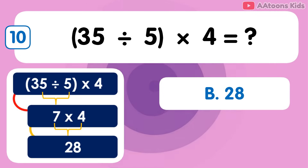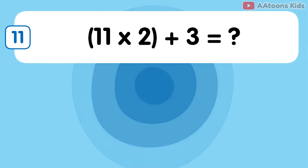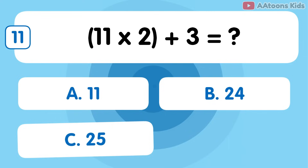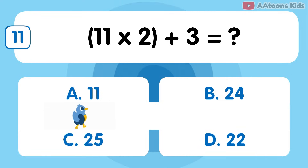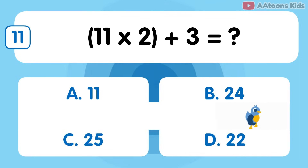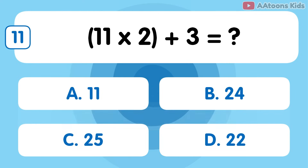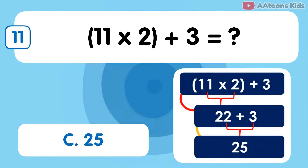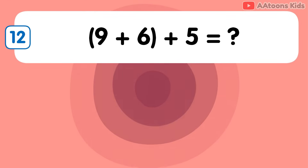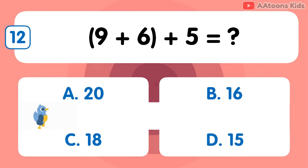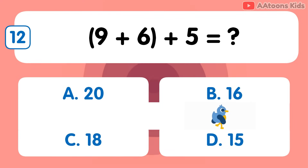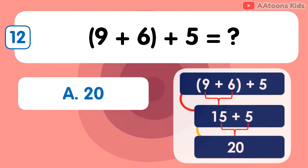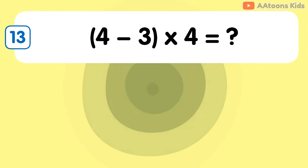28 minus 11 multiplied by 2 plus 3 is 9. 9 plus 6 plus 5 is 10. 28 minus 11 multiplied by 5 plus 5 is 20.